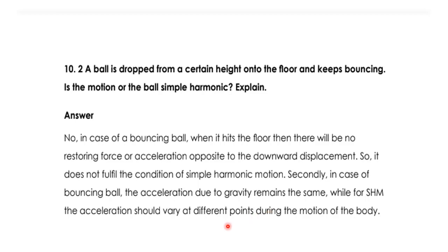And in the second case, you can say that the acceleration due to gravity remains the same. While in simple harmonic motion, the acceleration should vary at different points during the motion of a body. When simple harmonic motion happens, it changes and varies. It changes at mean position and at extreme position. But when we look at the bouncing ball case, the acceleration due to gravity is the same. The change is not happening. That's why it is not an example of simple harmonic motion.